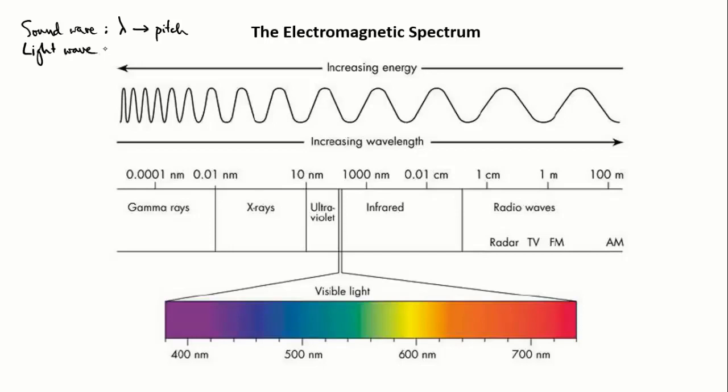In a light wave, the wavelength instead determines color, or more generally, the kind of wave.